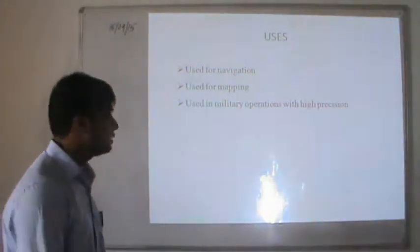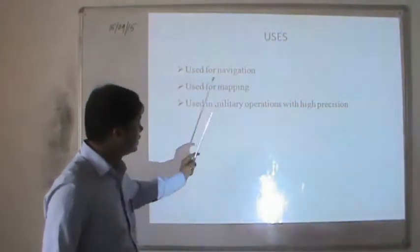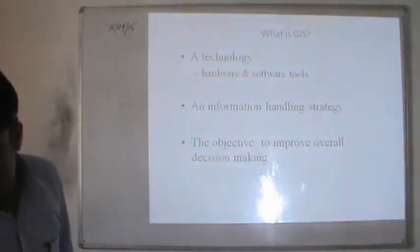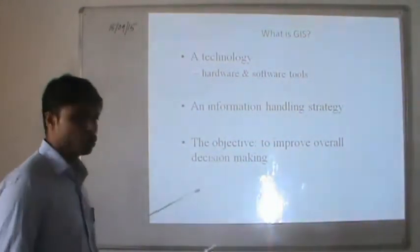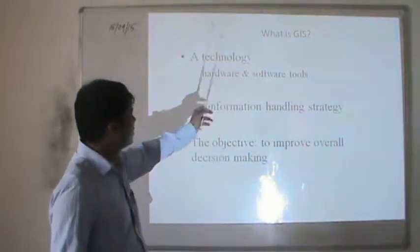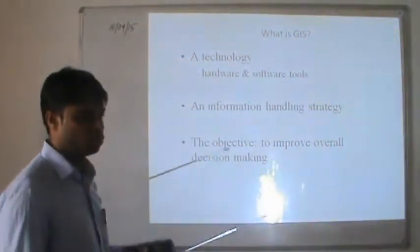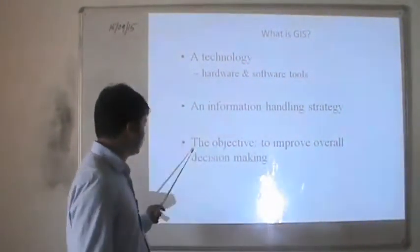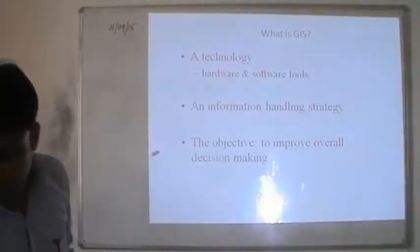Uses of GPS include navigation, mapping, and military operations for high precision. The next topic is GIS — Geographical Information System. GIS is a technology using hardware and software tools to gather and manage information about geographical areas, with the objective of improving overall digital decision making.